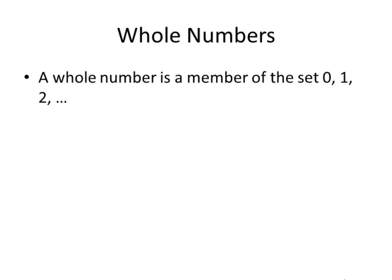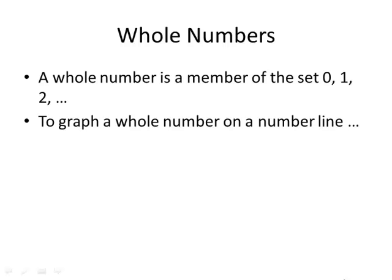The first definition we have in this section is that of a whole number, which is a number such as 0, 1, 2, etc. To graph a whole number on the number line, draw a number line and we start to label the whole numbers beginning at 0, 1, 2, 3, 4, 5, and so on. If you were asked to graph the number 5 on a number line, you would then put a dot at that point.